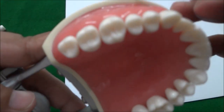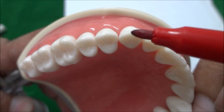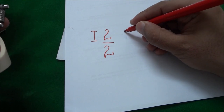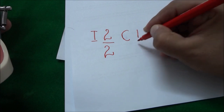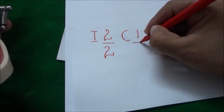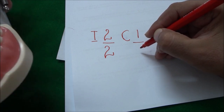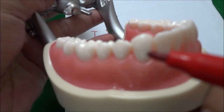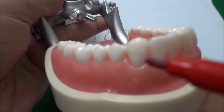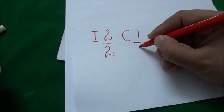The next tooth to the incisor is the canine — this is the pointed tooth. So we will write C for canine, and there is one canine in the maxillary arch. We draw a line; above that line is the maxillary and below that line is the mandibular tooth. In the mandibular arch we also have one canine, so we write one.